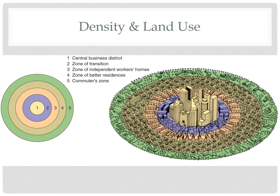This increases the population density. Then, as we continue to move farther from the CBD, land is cheaper because it's less accessible, allowing wealthier individuals to buy up bigger plots of land and to build big homes in the suburbs, resulting in significantly lower population densities.